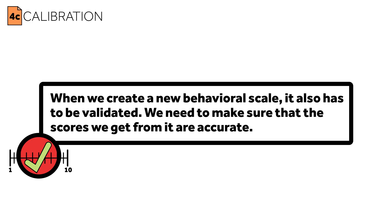When we create a new behavioral scale, it also has to be validated. We need to make sure that the scores we get from it are accurate. Perhaps it's a measure of anxiety — we have to test it against some known standard, or people with varying levels of known anxiety, to make sure that the results properly represent people's mental state. We also need to make sure that it can detect changes in anxiety. This is related to precision; it needs to be tight enough in its measurement that we can rely upon it to perform research.